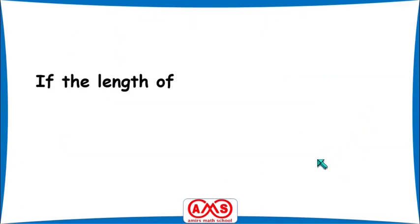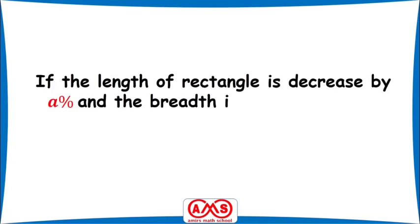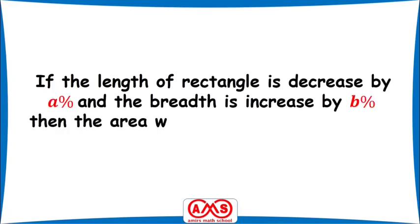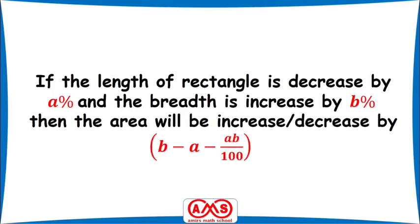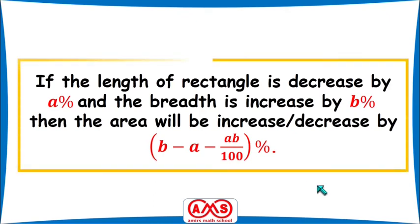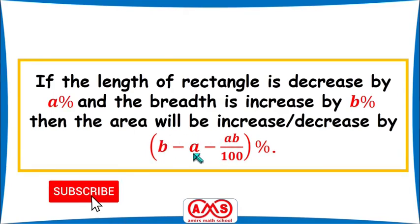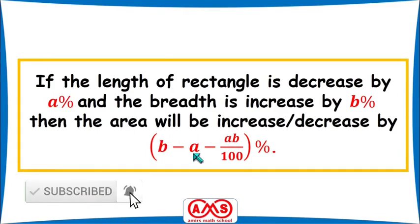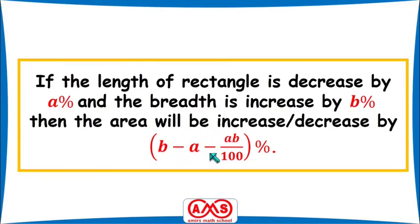Finally, the general formula: if the length of a rectangle is decreased by A percent and the breadth is increased by B percent, then the area will increase or decrease by B minus A minus AB divided by 100 percent. Here B represents the breadth increase percentage and A represents the length decrease percentage. A positive result means an increase in area; a negative result means a decrease.